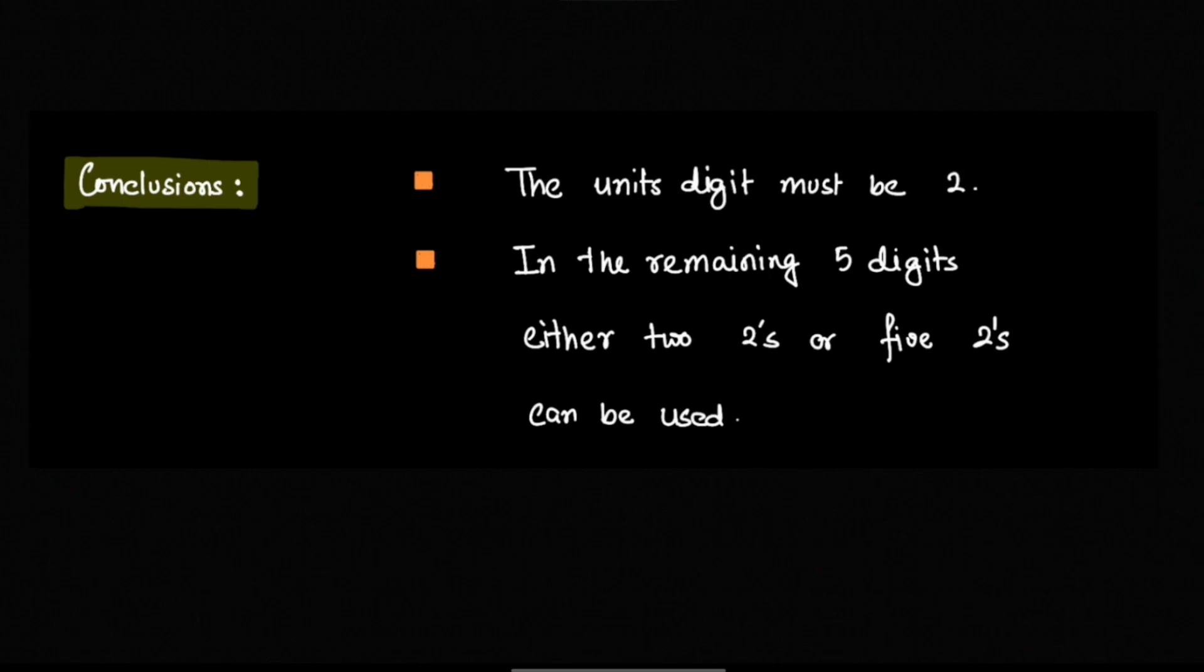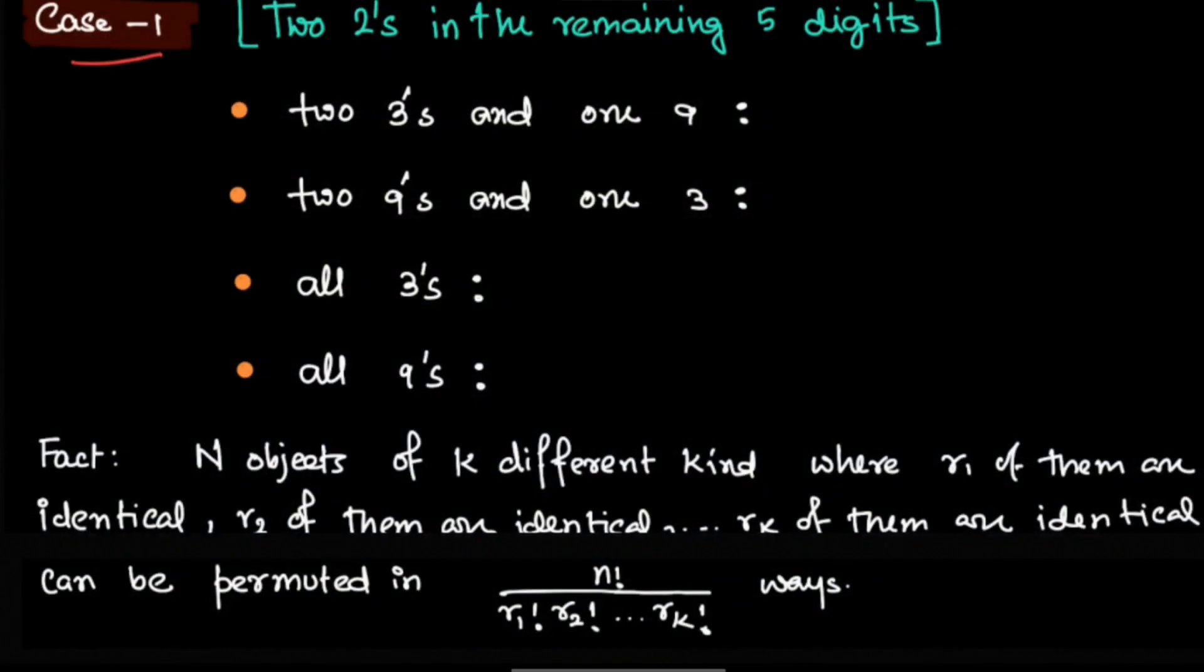Now let us make a few cases. Case 1: if we have two 2s in the remaining 5 digits, then 3s and 9s - how many 3s and 9s can be there, that can vary. If we have two 3s and one 9, and we already have two 2s, that makes 5 digits and the last digit is already fixed. There can be another case where we have two 9s and only one 3, or all of them can be 3s, or all of them can be 9s.